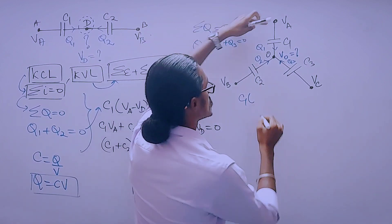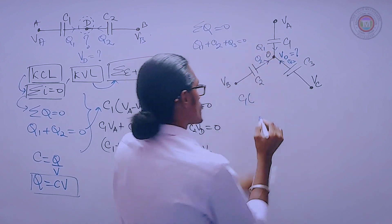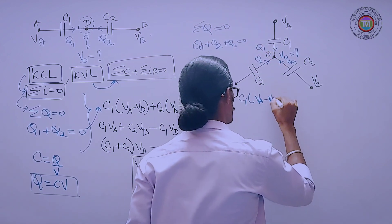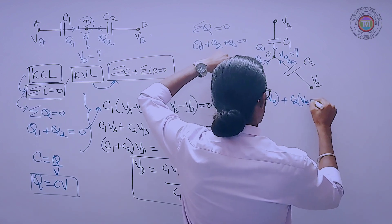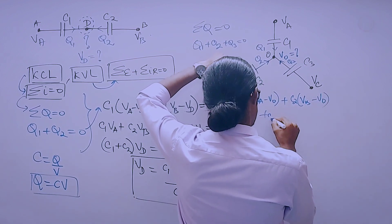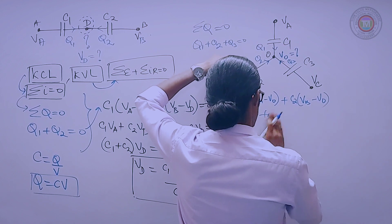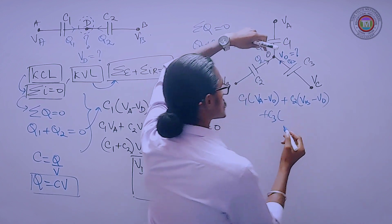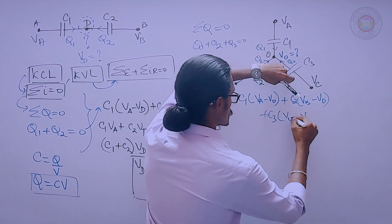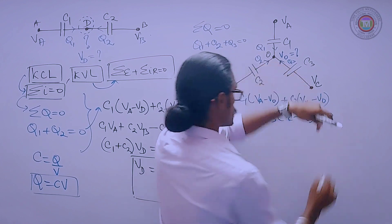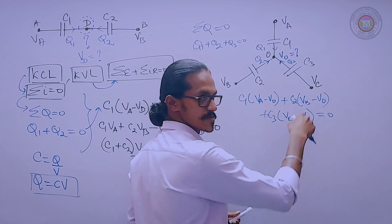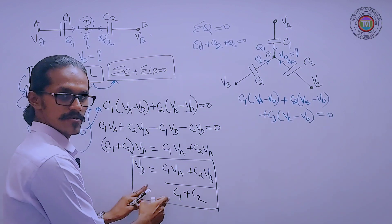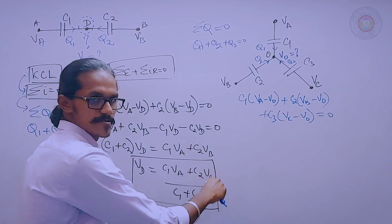Instead of this Q1, I can substitute C1 times higher minus VO, plus C2 times VB minus VO, plus C3 times VC minus VO equal to zero. Because the VO comes in the negative form, then exactly the formula.